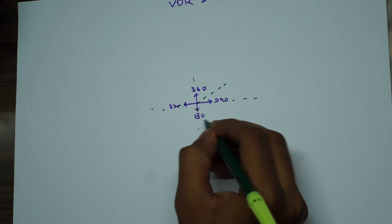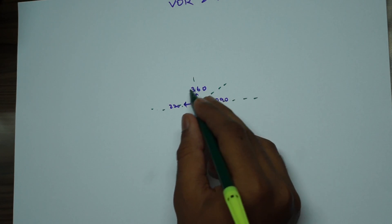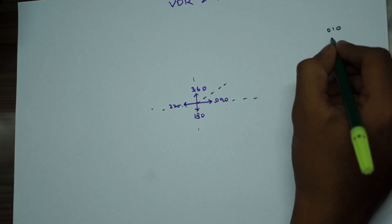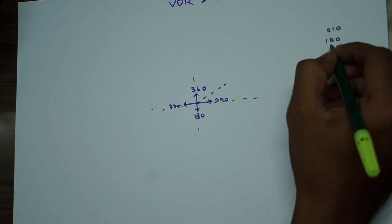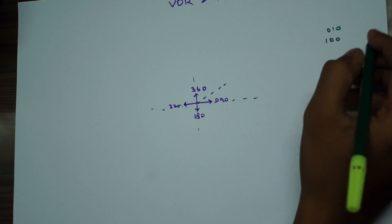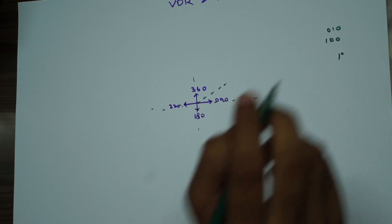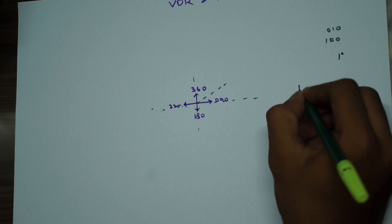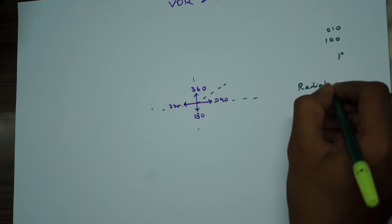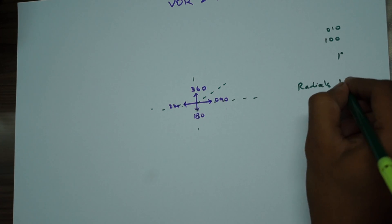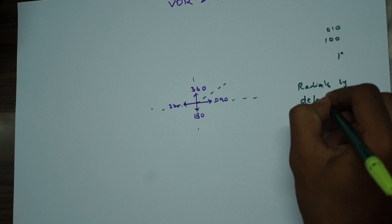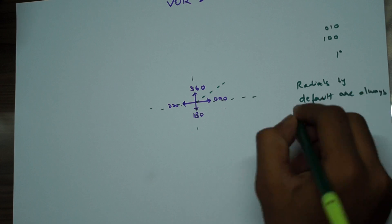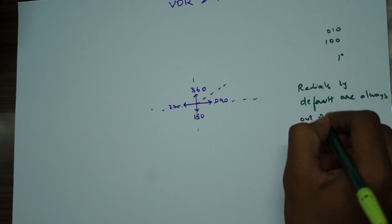These lines are called radials. Radials are imaginary lines radiated out of the VOR antenna that help us navigate — maybe to come to a station or go out of the station on a particular track, to avoid collision with traffic and provide a safer path of travel. The area is divided into 360 radials, at a separation of one degree each, and radials by default are always out of the station.